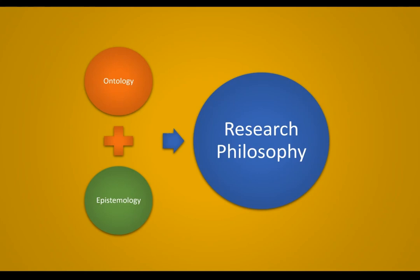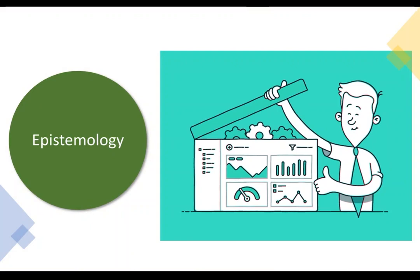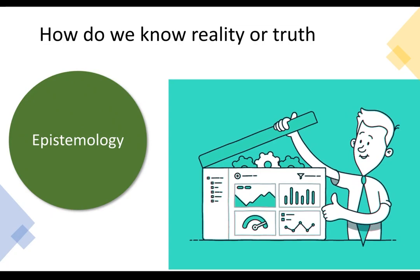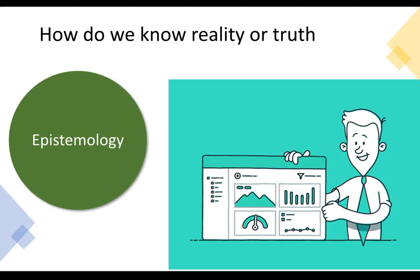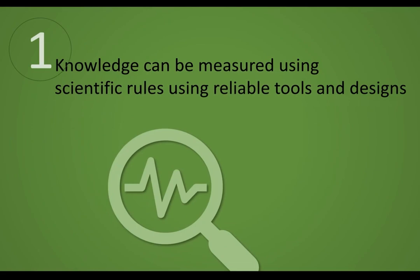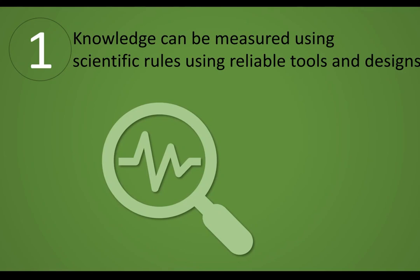Epistemology tells you about how we receive knowledge — how do we know about truth, how do we know about reality. It tells us how we receive or collect knowledge. Similarly to ontology, there are a lot of epistemological beliefs available, but here I am taking only three famous beliefs of epistemology. The first belief is that knowledge can be measured using any reliable tools and techniques, so there is measurability in the truth or in the knowledge.